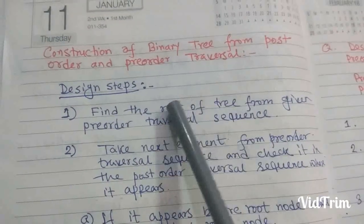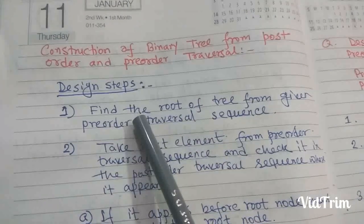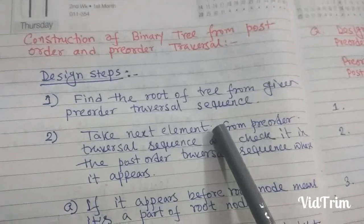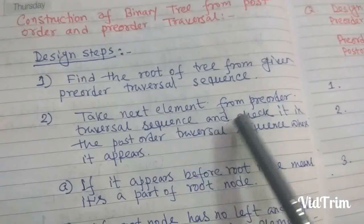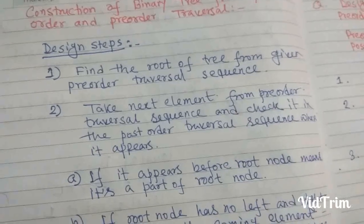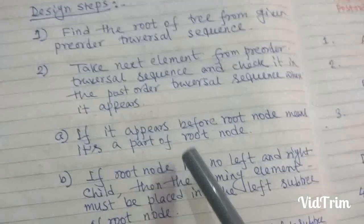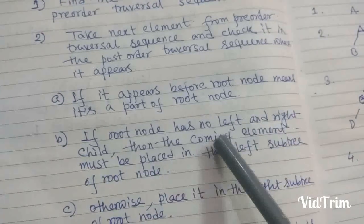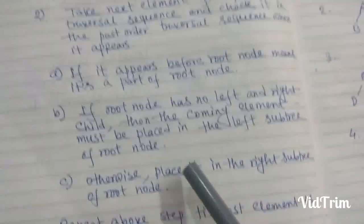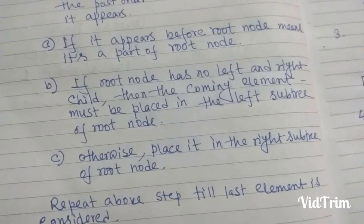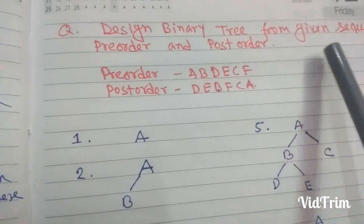Today we will learn about the construction of a binary tree from post-order and pre-order traversal. The steps are: first, find the root of the tree from the given pre-order traversal sequence. Then take the next element from pre-order traversal and check where it appears in the post-order traversal sequence. If it appears before the root node, it is part of the root node's subtree. If the root node has no left or right subtree, place the element in the left subtree; otherwise place it in the right subtree. Repeat until the last element is considered.